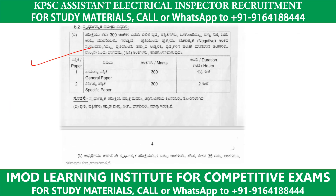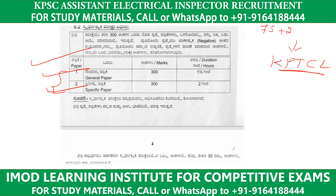Coming to mode of exam: there are 2 papers — one general paper and one technical paper. Unlike KPTCL exams which are usually 75 technical and 25 General Awareness and Aptitude, this KPSC exam is different. The general paper means detailed general studies, and the weightage is equal between the technical paper and the general paper.